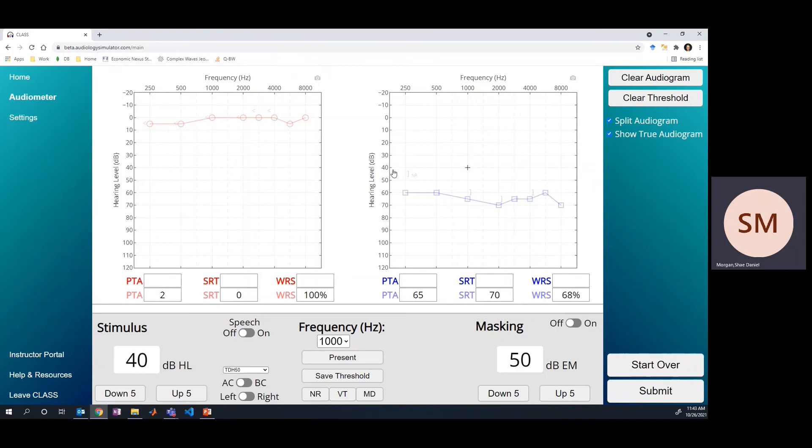If we increase the level by 10 dB because they didn't respond and present again, you'll notice that we get a response this time. And we're not getting a response because we heard it in the test ear - we're getting a response because of crossover hearing.